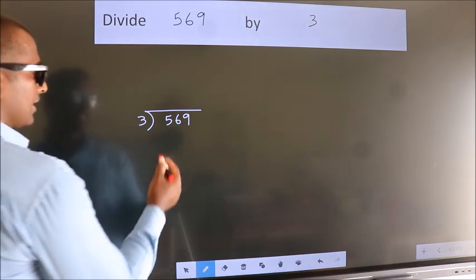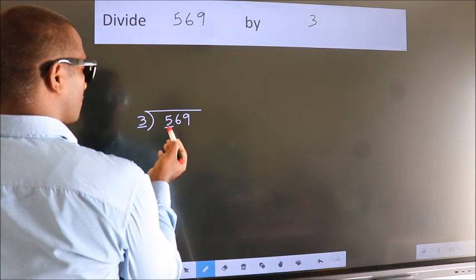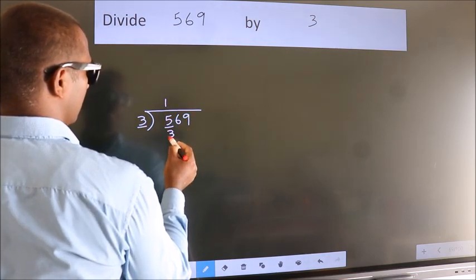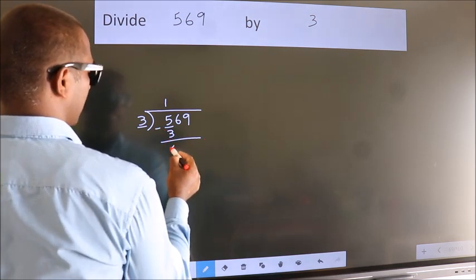Next, here we have 5, here 3. A number close to 5 in 3 table is 3 once 3. Now we should subtract. We get 2.